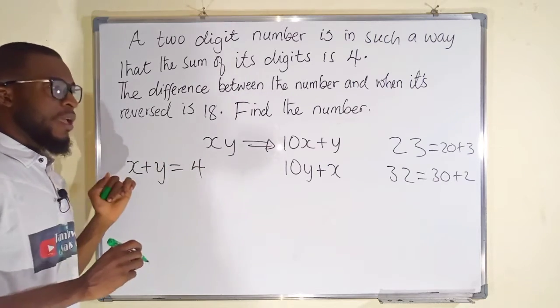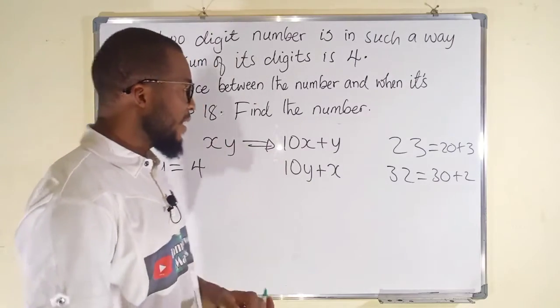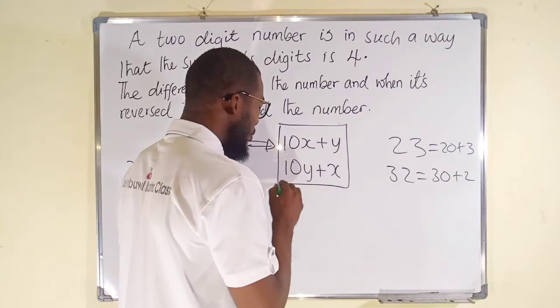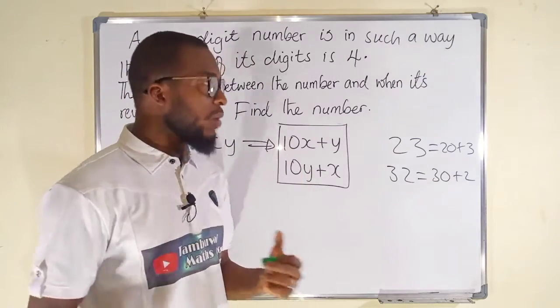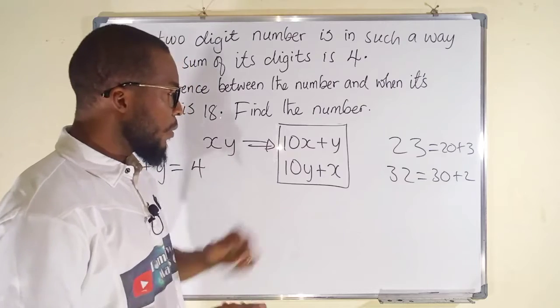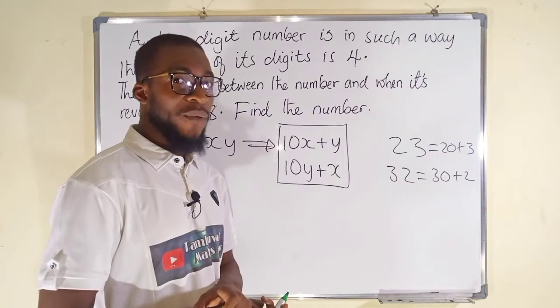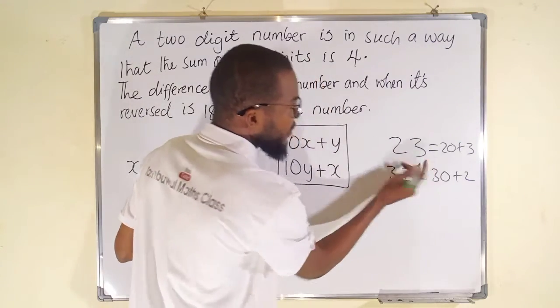And the difference between the number and when it is reversed is 18. But remember, to take the difference between two numbers you have to take the higher number minus the lower or the smaller number. But which one is higher among these two numbers? We don't know, therefore we can consider absolute value.